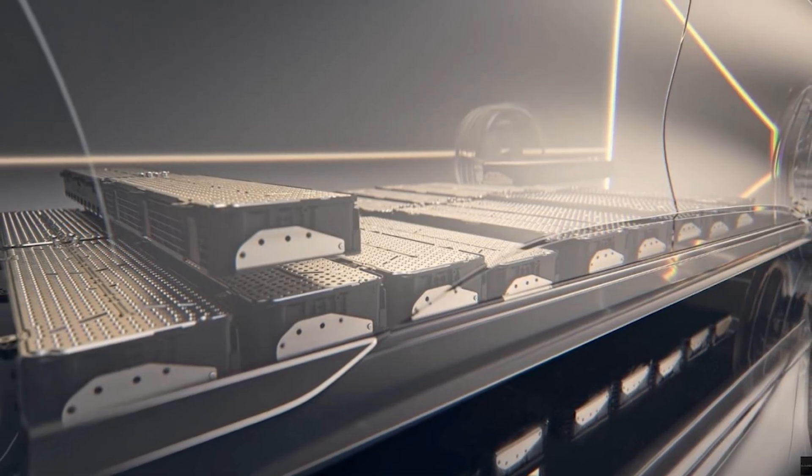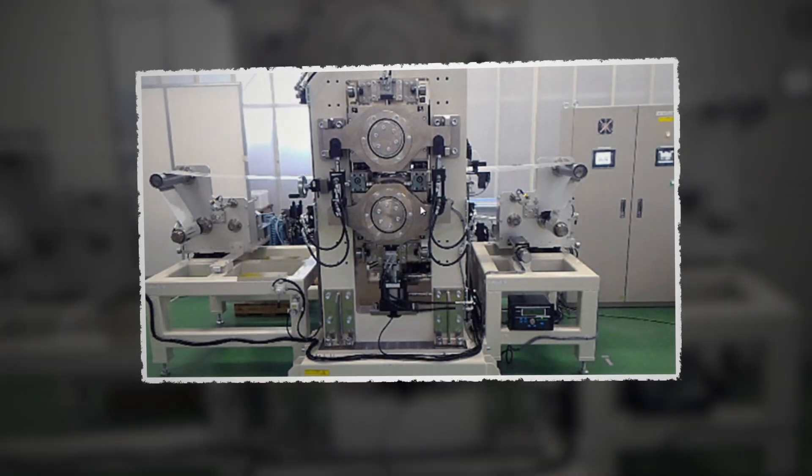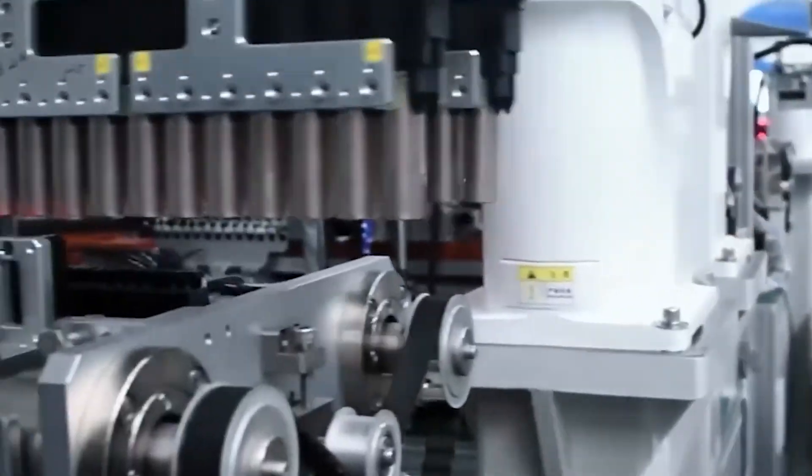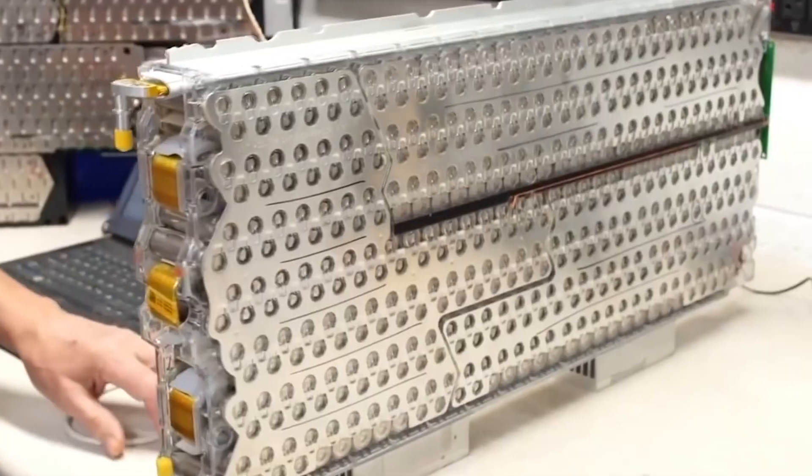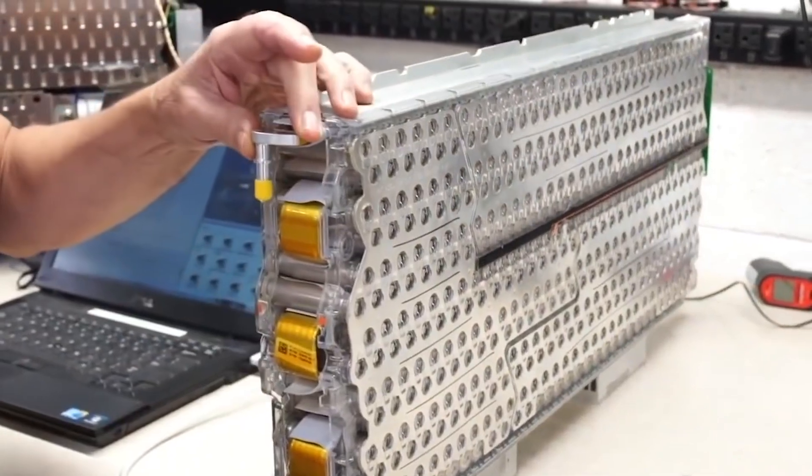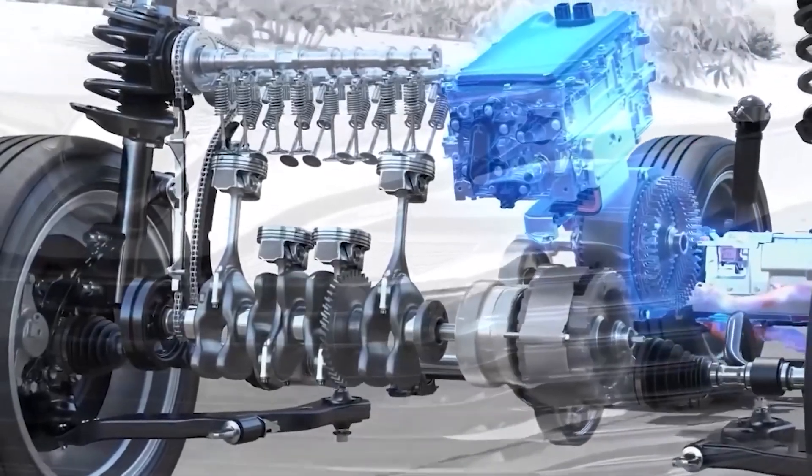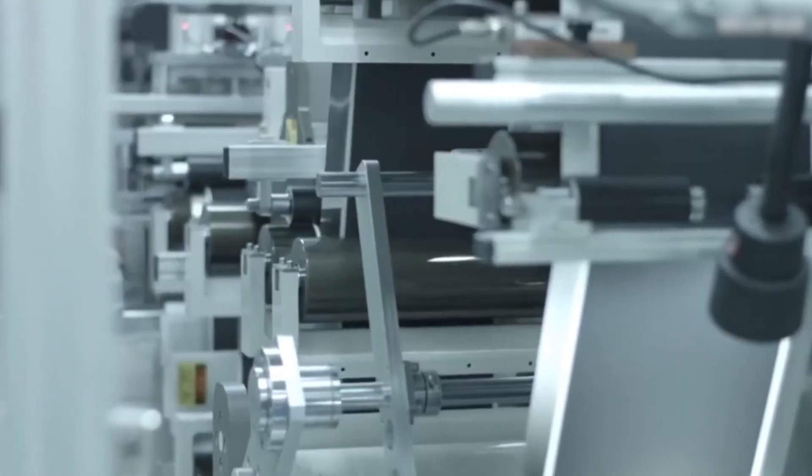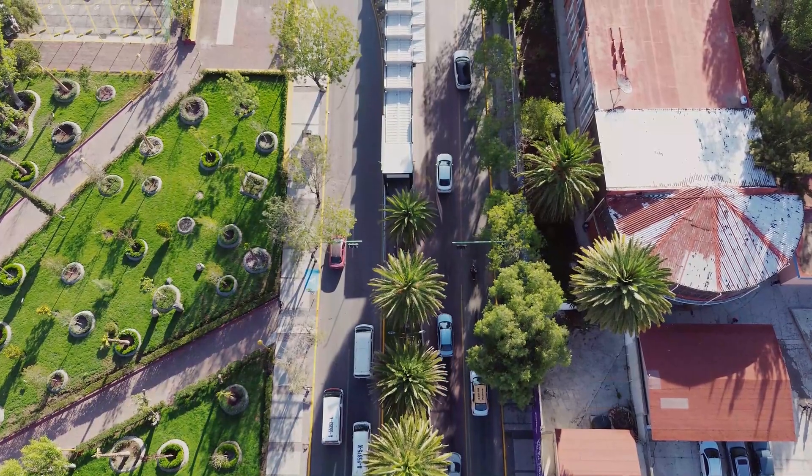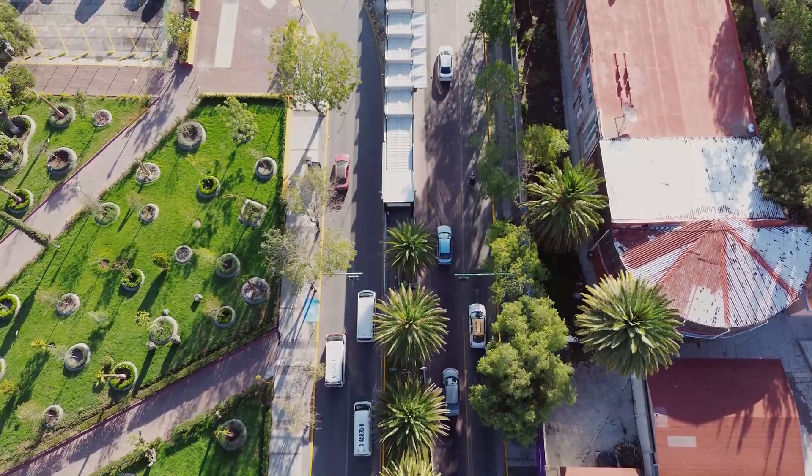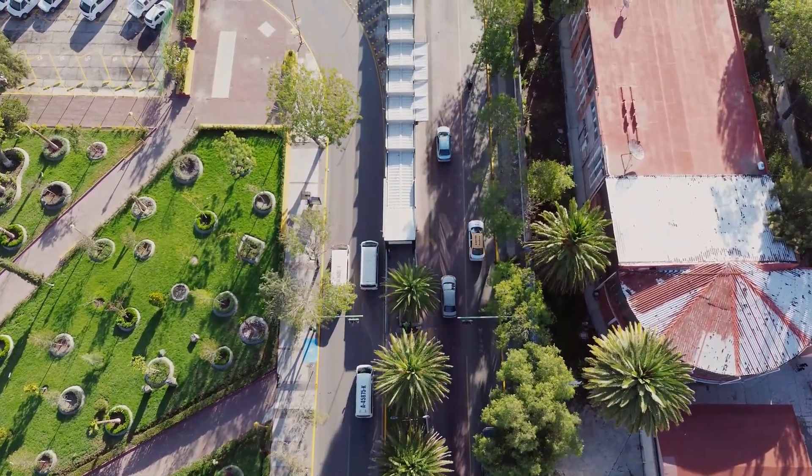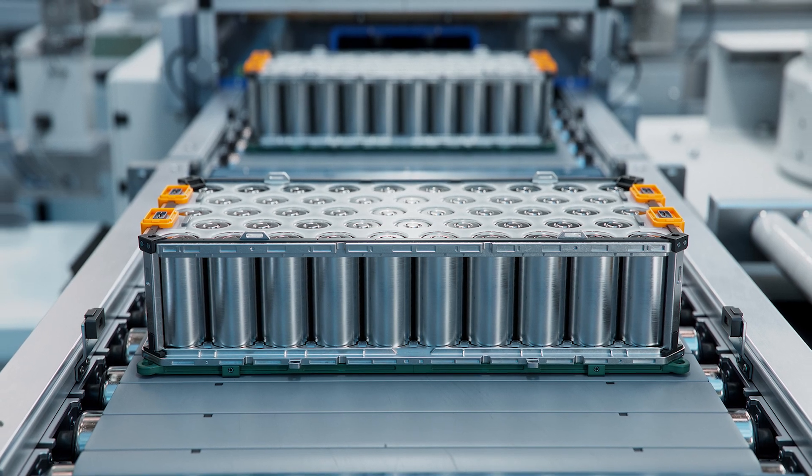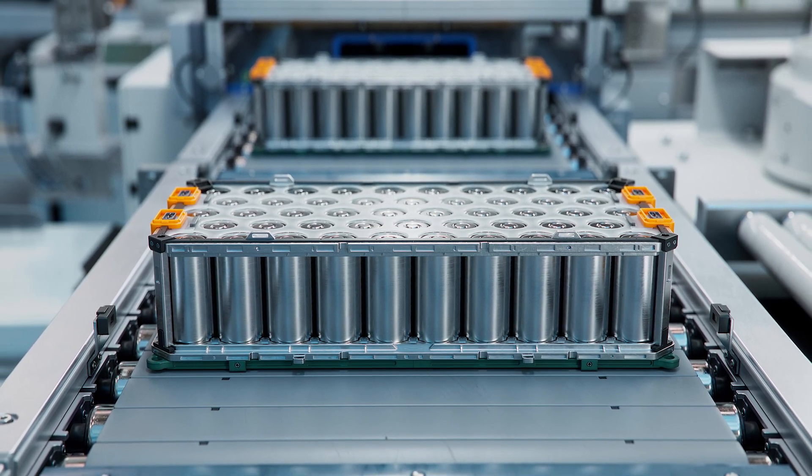Samsung's roll-press assembly process brings game-changing benefits: 78% faster production, dramatically speeding up battery manufacturing and helping Samsung keep up with growing demand for electric vehicles and energy storage; 62% less material waste, making the process more cost-effective and environmentally friendly; and 41% lower energy consumption, resulting in a much smaller carbon footprint and more sustainable battery production.